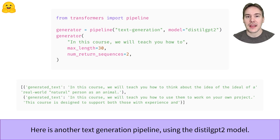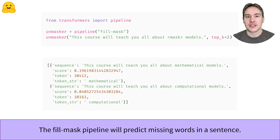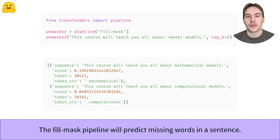DistilGPT-2 is a lighter version of GPT-2 created by the Hugging Face team. When applying the pipeline to a given prompt, we can specify several arguments such as the maximum length of the generated text or the number of sentences we want to return. Generating text by guessing the next word in a sentence was a pre-training objective of GPT-2. The fill-mask pipeline is a pre-training objective of BERT, which is to guess the value of masked words. Here we ask for the two most likely values for the missing words, and get 'mathematical' or 'computational' as possible answers.